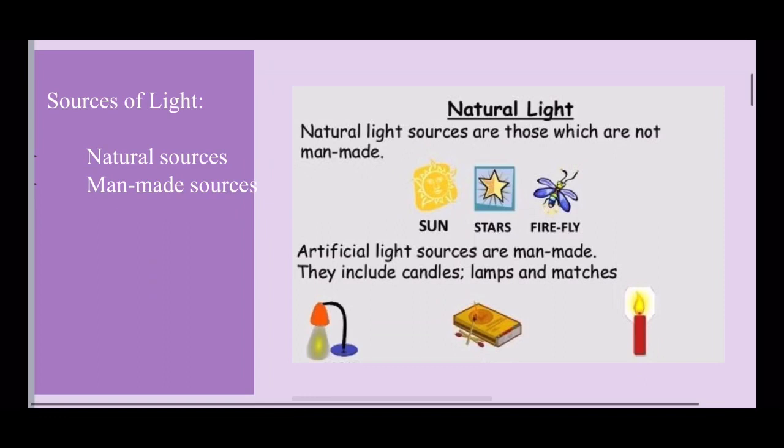We talk about the sources of light. We have classified the sources of light into two categories: natural sources of light and man-made sources of light. The sources of light that occur in nature are called natural sources of light. For example, the sun, the stars, fireflies, some deep sea organisms, and even the moon is a natural source of light.